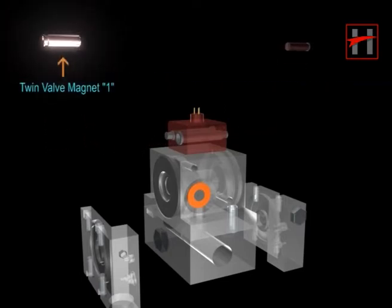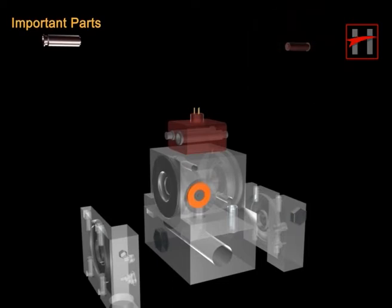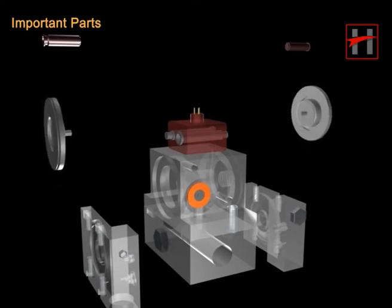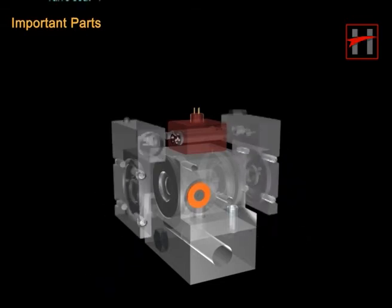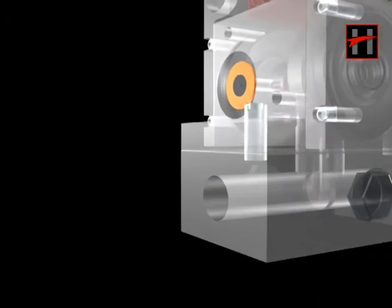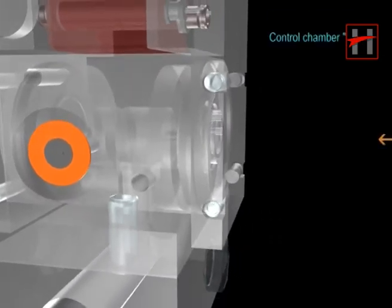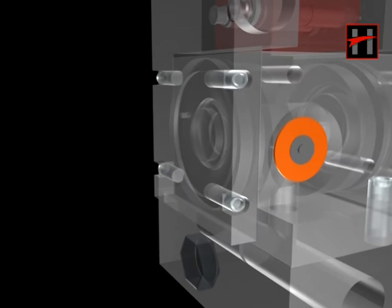The twin valve magnets 1 and 2, diaphragm 1 and diaphragm 2, valve seat 1, valve seat 2, control chamber 1, and control chamber 2.